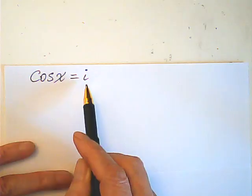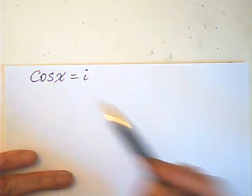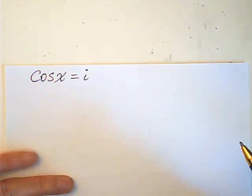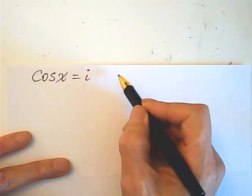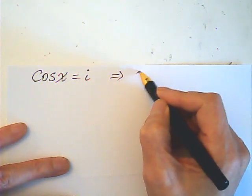Now, cosine x is equal to i. We're looking for x. Now, from this, we can find sine, right?